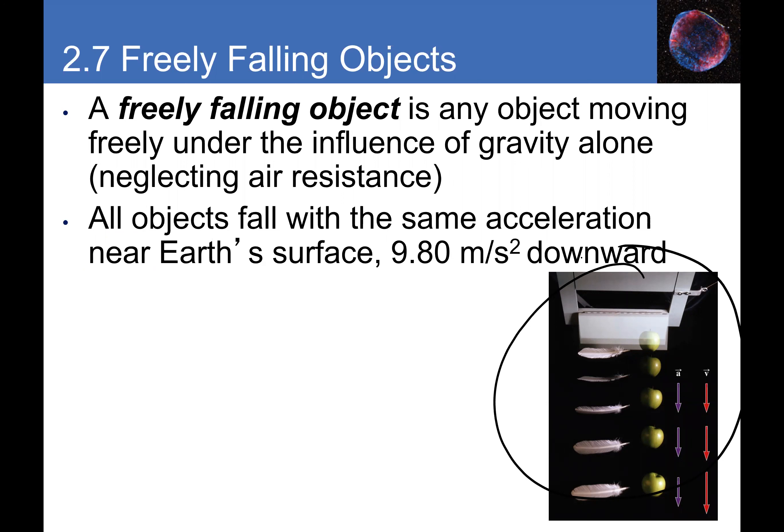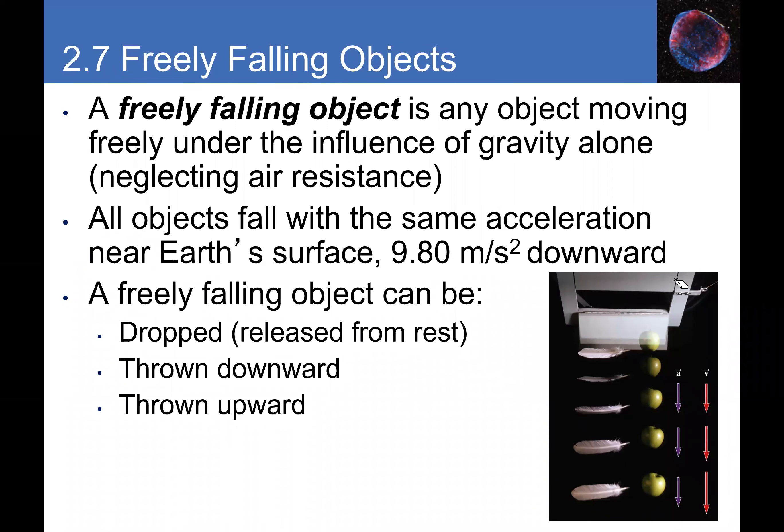A freely falling object can be dropped (released from rest), thrown downward, or thrown upward. As soon as it leaves your hand, gravity takes over. The acceleration always acts downward, so if initial velocity is upward, the object slows down, stops, then falls back. Any object thrown upward goes up, slows down, stops, then drops — from that peak it's essentially just being dropped.